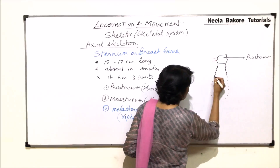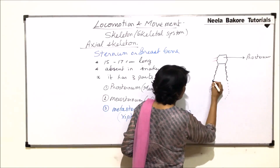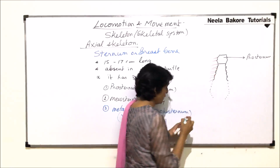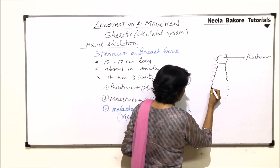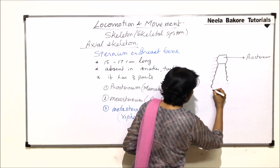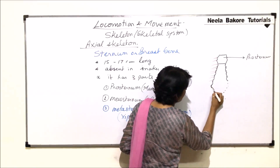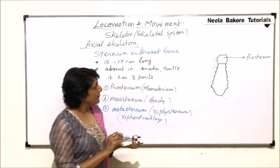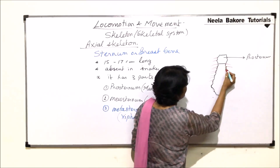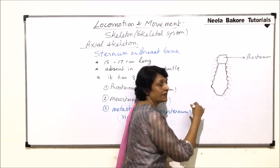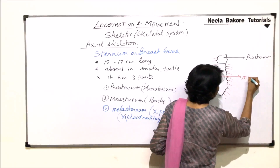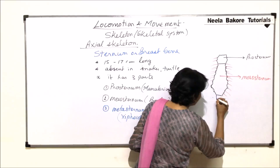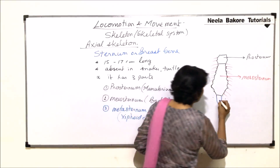The mesosternum provides attachment for the second, third, fourth, fifth, sixth, and seventh pairs of ribs. These are the articulating facets where the ribs get attached. This is the shape of the mesosternum — the middle or body part. Below it is the last part, the metasternum, which is cartilaginous and a small structure.